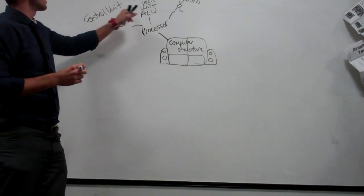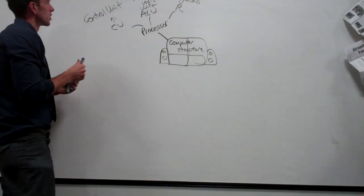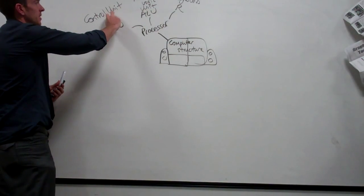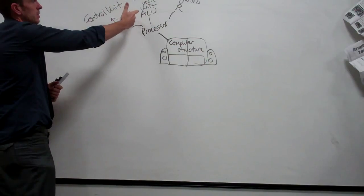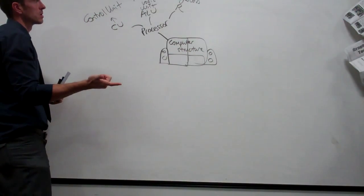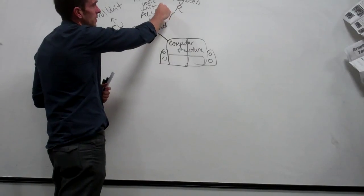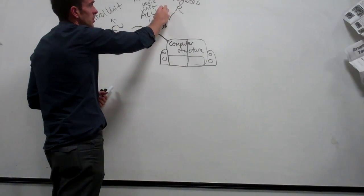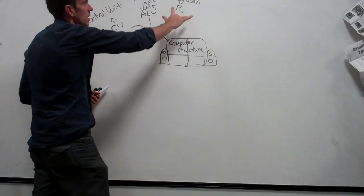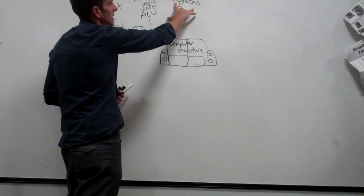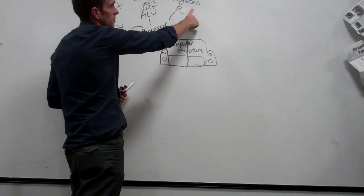We need to be able to explain in the exam what each part does. We've obviously spoken about fetch-execute cycles. The control unit controls the other parts of the processor and makes sure those instructions are done correctly. The arithmetic logic unit carries out all the calculations and makes logical decisions — your ANDs, ORs, NOTs, IFs, truths, falses, boolean. Registers are the temporary storage locations in the processor.